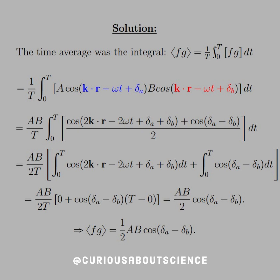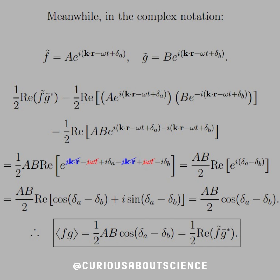Now we've just got to verify this. So meanwhile, in the complex notation, what we see here is that we have f tilde equal to A e to the i dot product k and r minus omega t plus delta a. G tilde is equal to the same thing, but with B and delta b. So what we need to do is verify that one-half real times the product of f and g star is equal to one-half A, B cosine with the difference in phase.